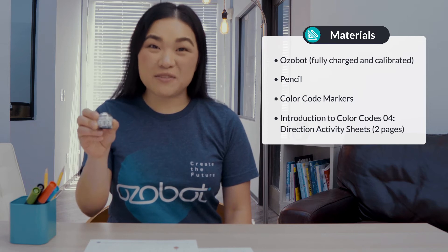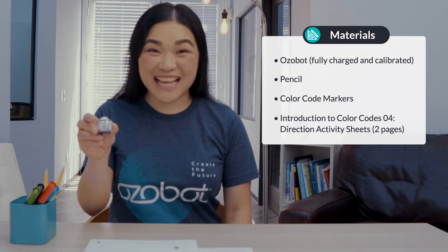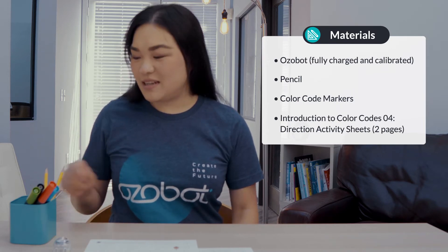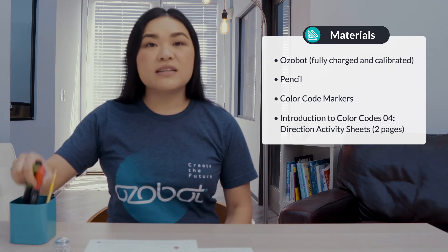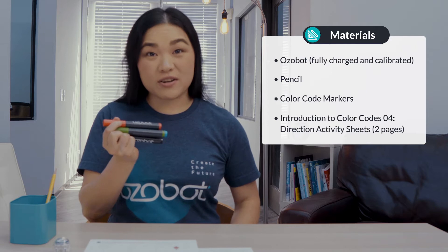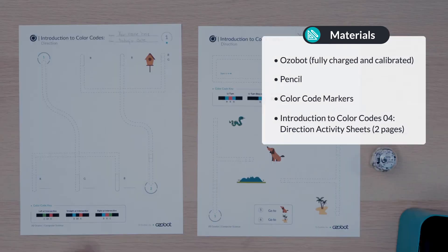For today's lesson you'll need an Ozobot, fully charged and calibrated, a pencil, color code markers, and both pages of your introduction to color codes direction activations.